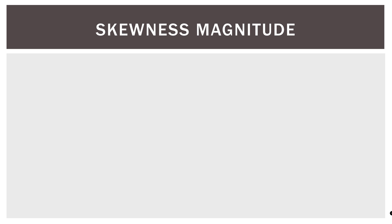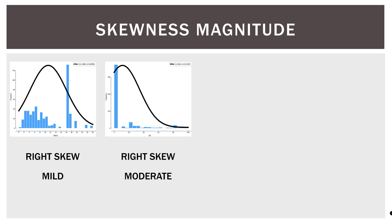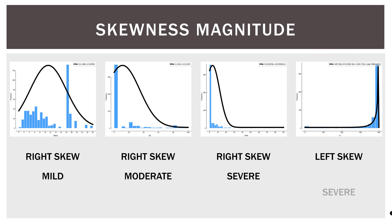So skewness also comes in orders of magnitude. So we have right-skew mild, right-skew moderate, right-skew severe, and of course we have the same in terms of left-skew. And depending on the severity of the skew, we will implement certain transformations to try to un-skew our variable.